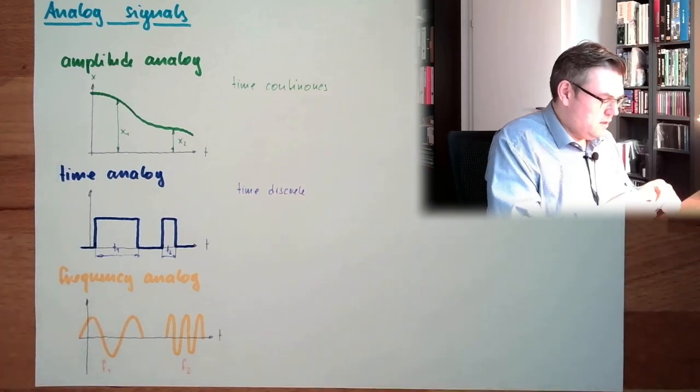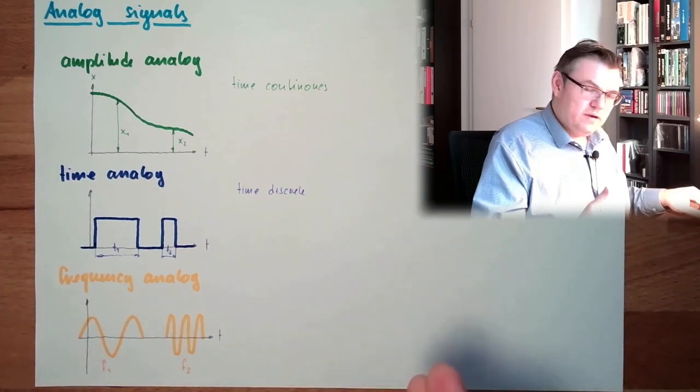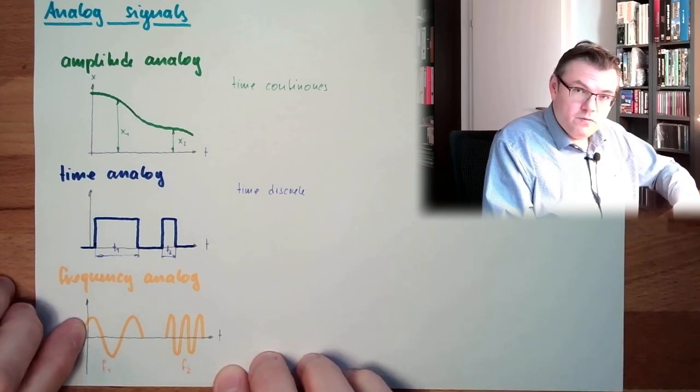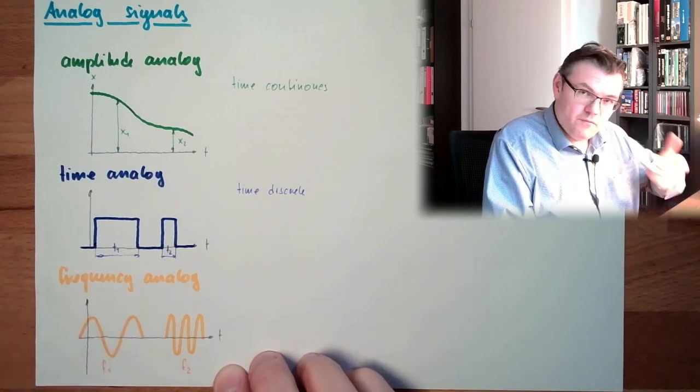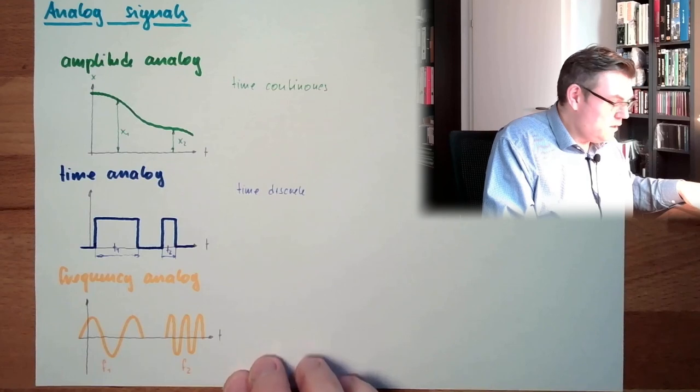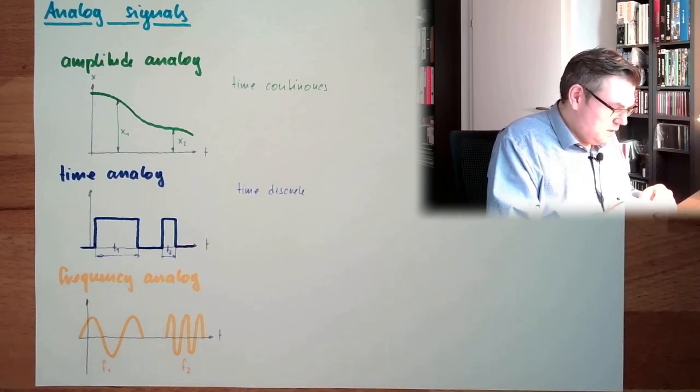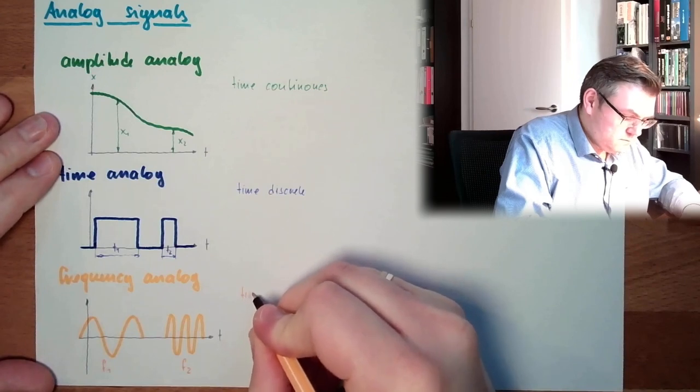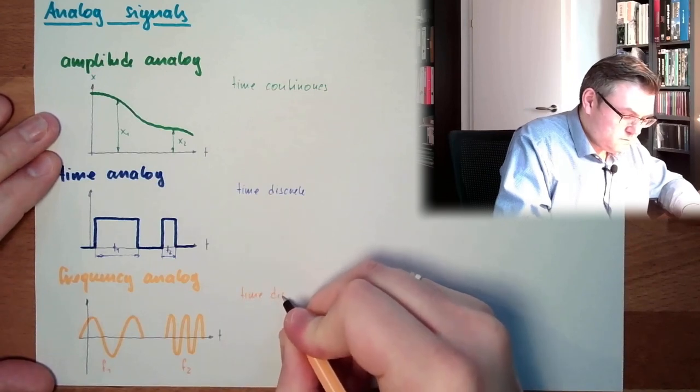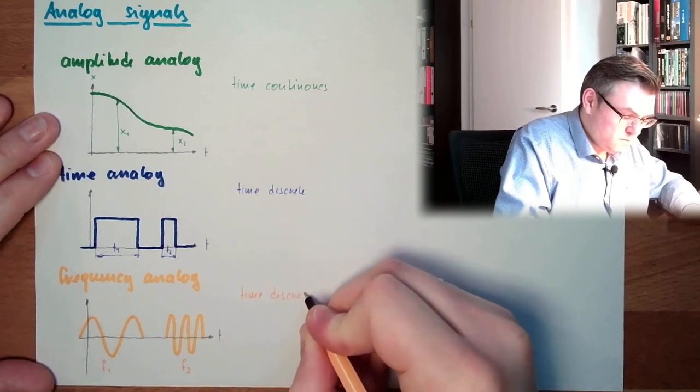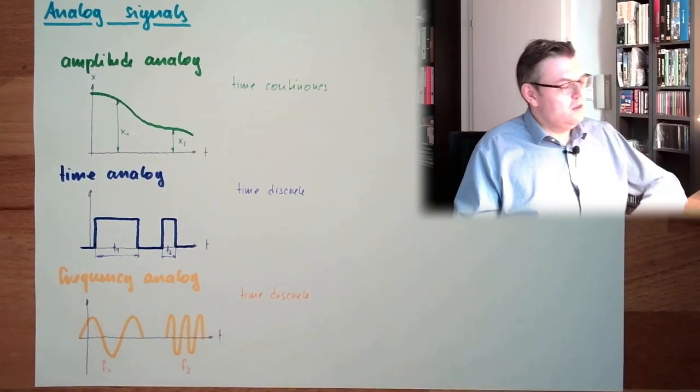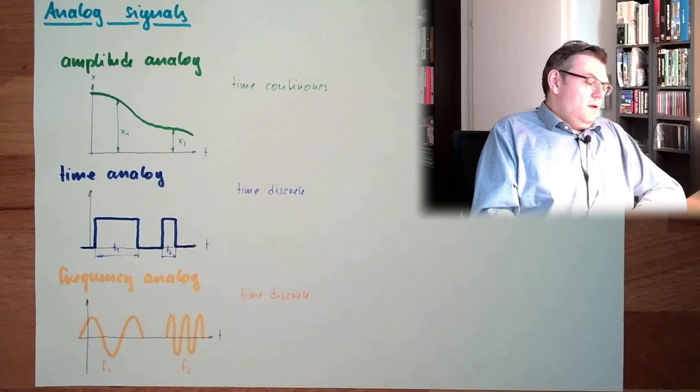Time discrete. And also here, I have, I need a certain time to determine. Here, I don't know the frequency. I know it here. After one period, I know. So this is also time discrete.